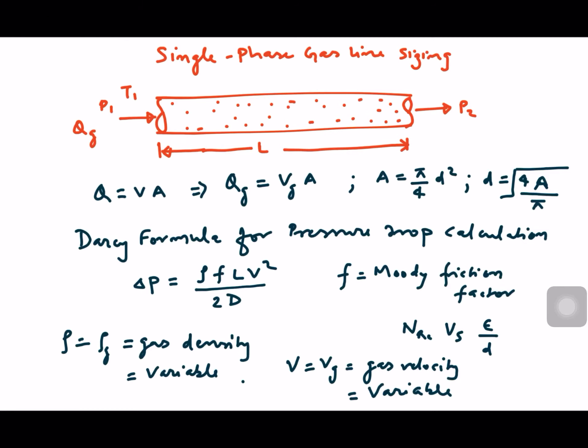Let's talk about the single-phase gas line sizing. We take a pipe of known diameter and length L. When we do gas line sizing, or any line sizing, we first assume a diameter and then validate whether it is correct by checking the velocity criteria and pressure drop criteria for the given flow rates to be carried through this pipeline.